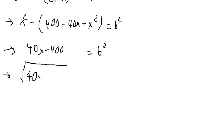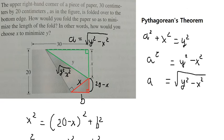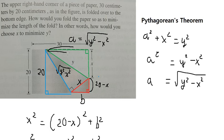Now let's consider the blue triangle. We have the number 20 here, and this value is a. We can find the value of c using a minus b.